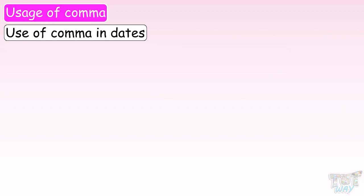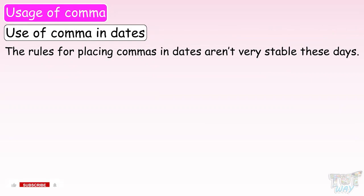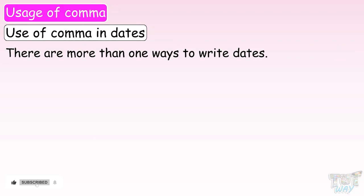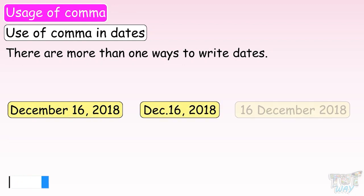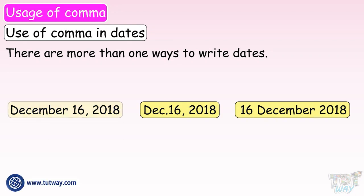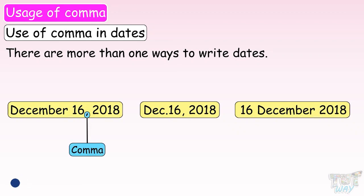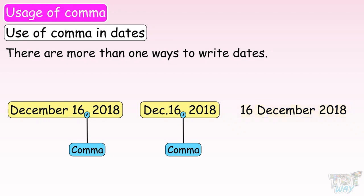Now let's learn how we use commas in dates. The rules for placing commas in dates aren't very stable these days — there is more than one way to write dates. Look carefully and see the usage of commas. In the first format, we use a comma after the date. In the second, we use an abbreviation for the month and a comma after the date. In the third, we do not use any comma. All are correct in their own sense.